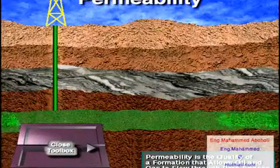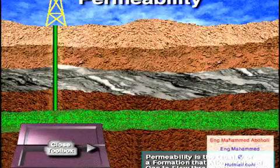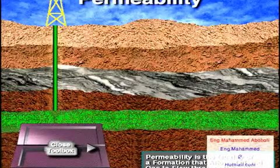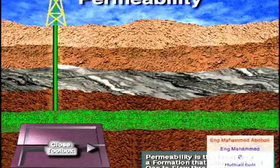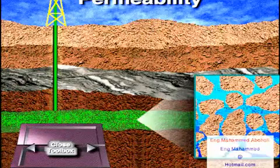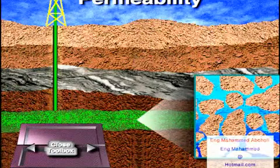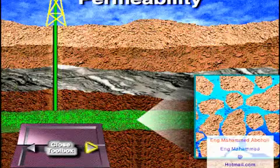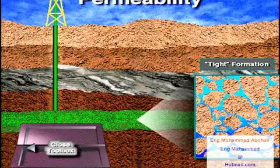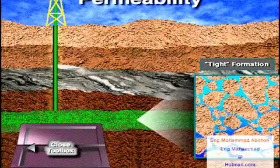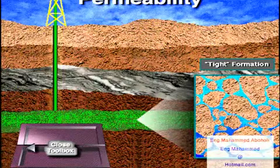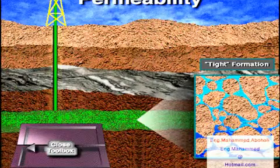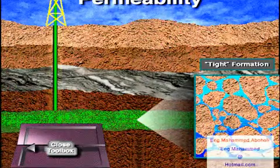Permeability is the quality of a formation that allows oil and gas to flow through the pore spaces of rock. Highly permeable formations allow fluids to flow easily. A formation with low permeability is called a tight formation. It is harder to produce than a formation with high permeability.